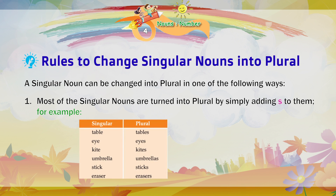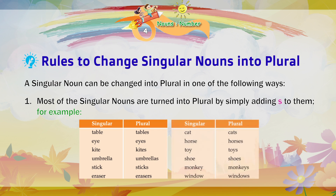Singular — Plural. Table — Tables. Eye — Eyes. Kite — Kites. Umbrella — Umbrellas. Stick — Sticks. Eraser — Erasers. Cat — Cats. Horse — Horses. Toy — Toys. Show — Shows. Monkey — Monkeys. Window — Windows.